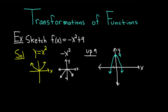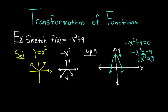Now you might be wondering, do you have to find the x-intercepts? Sure, why not — they're pretty easy to find. You basically just set it equal to 0: negative x squared plus 9 equals 0. Subtract 9 to get negative x squared equals negative 9, so x squared equals 9. Taking the square root gives plus or minus 3. You can also verify: plugging in 3 gives negative 9 plus 9, and plugging in negative 3 also gives negative 9 plus 9, which in both cases is 0.